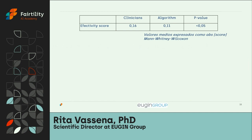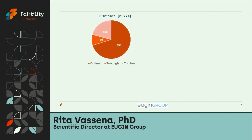If we translate the effectivity score into a visual representation, it reflects the dispersion of doses around the optimum. Clinicians show a dispersion of 0.16, while the algorithm narrows this closer to the optimal dose. Looking at patient outcomes: of 774 patients treated with clinician-prescribed doses, 531 were in the optimal dose range for achieving 10 to 15 M2. About 160 received a dose that was too low and didn't reach the optimal range, while 69 received a dose that was too high, exceeding what was necessary.